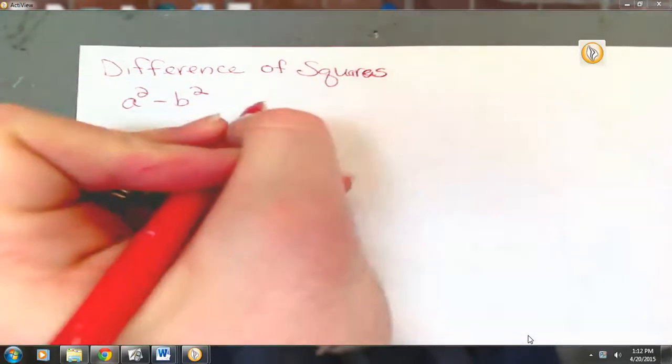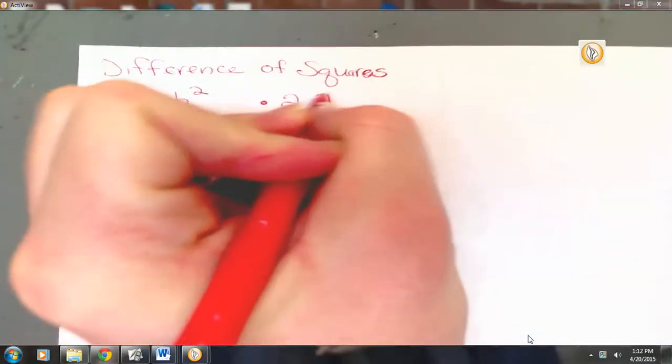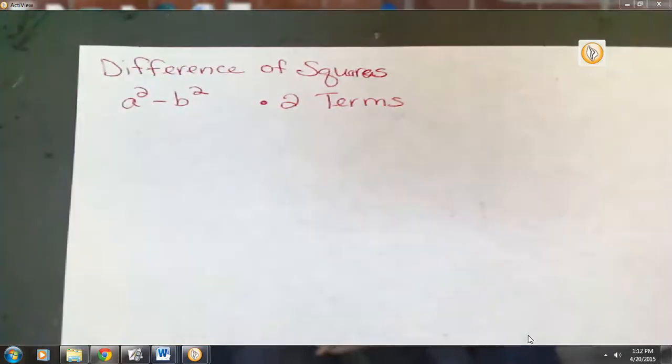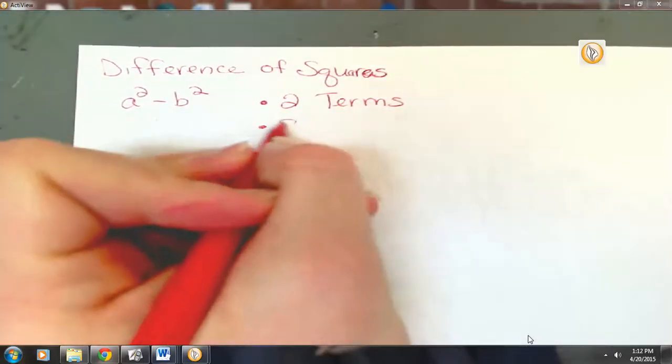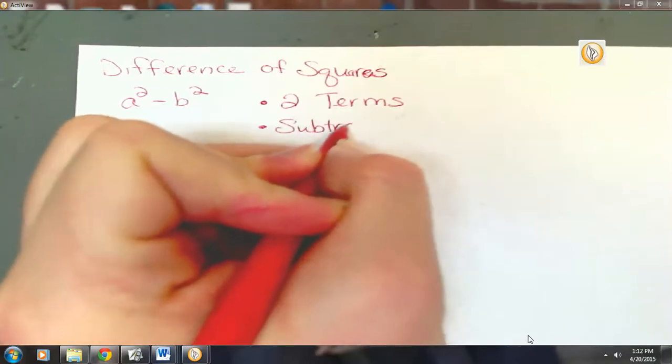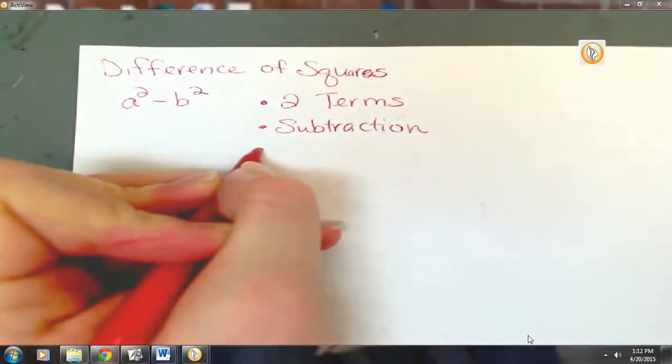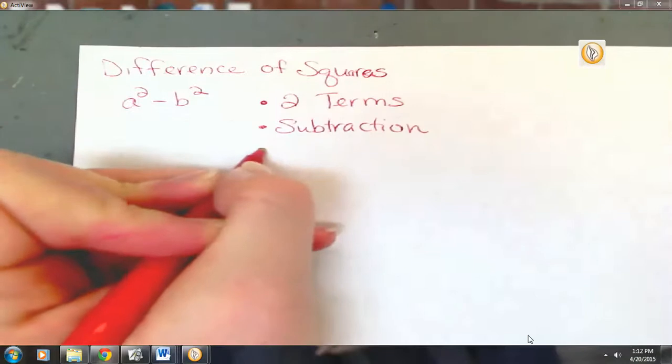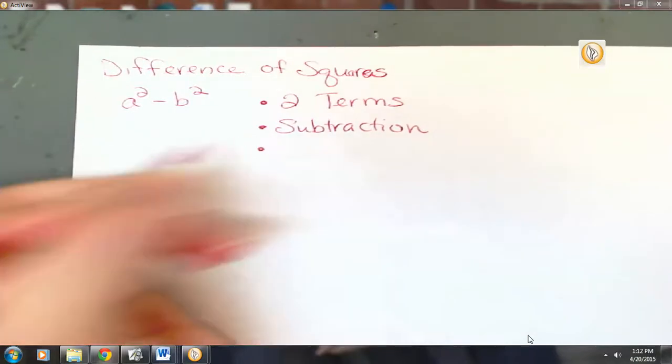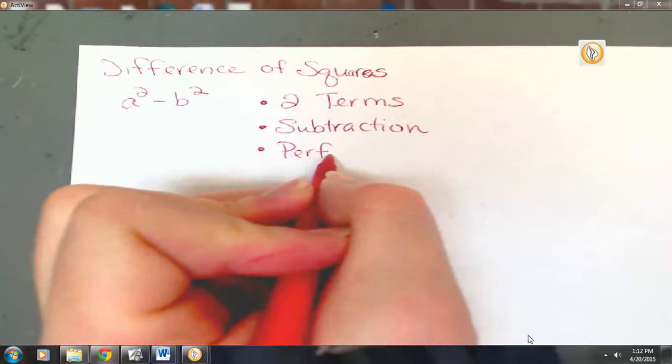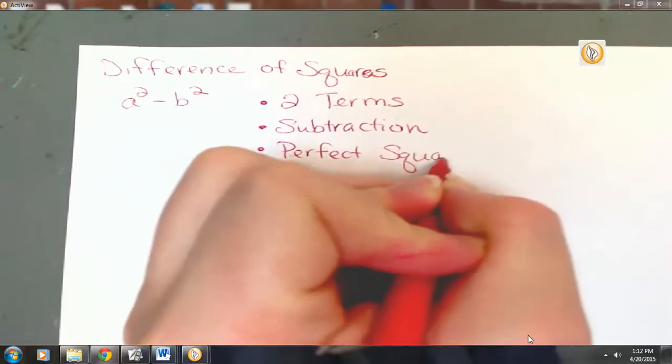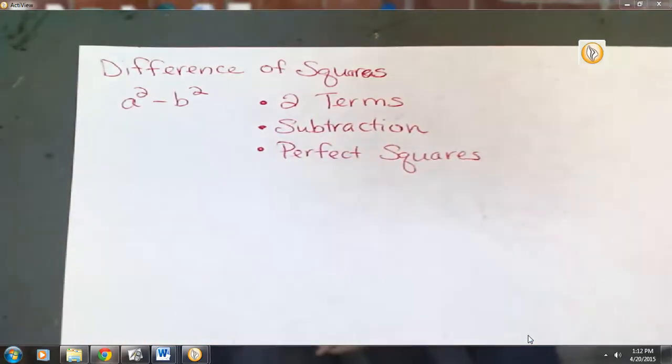To factor using difference of squares, you have to have two terms. You have to have two terms. You have to have subtraction. And you have to have perfect squares. You have to have all three of those: two terms, subtraction, and perfect squares.